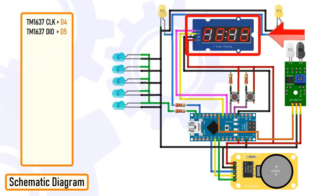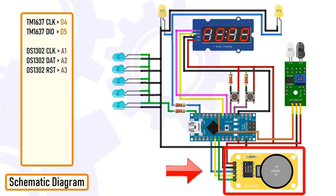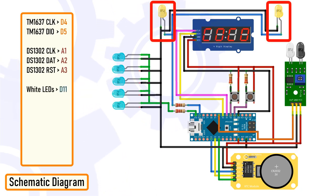The TM1637 digital clock module connects to the D4 and D5 pin of the Arduino. The DS1302 RTC module connects to the A1, A2 and A3 pin of the Arduino. The two white LEDs displayed on both sides of the digital clock connects to the D11 pin of Arduino. These two LEDs flash three times every hour when the minutes counter is reset to zero.